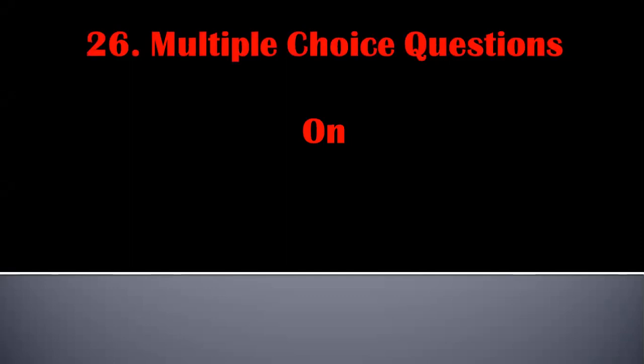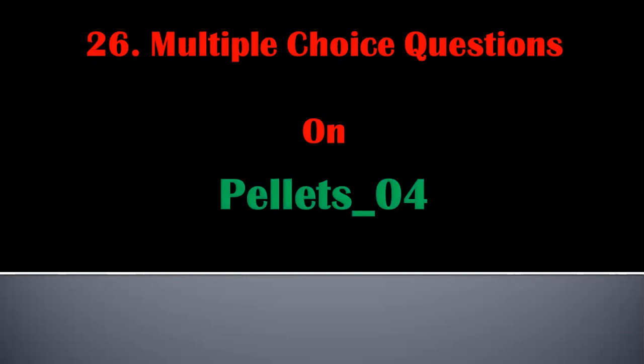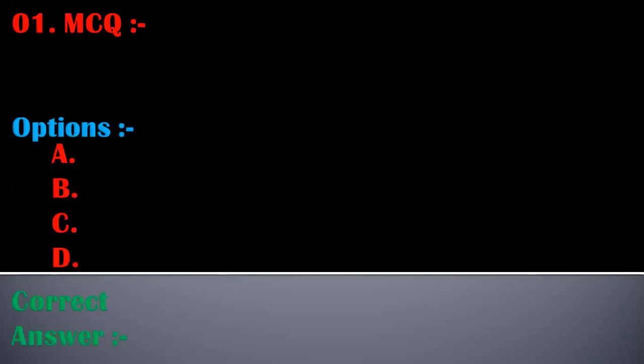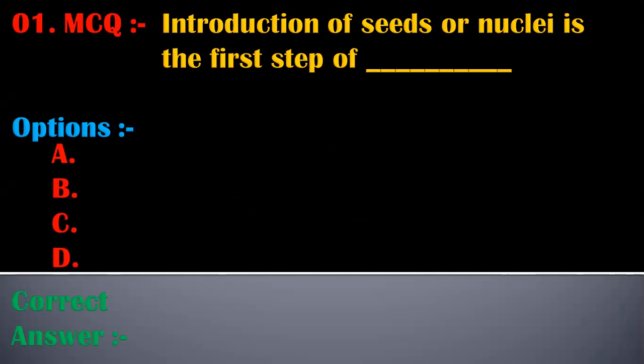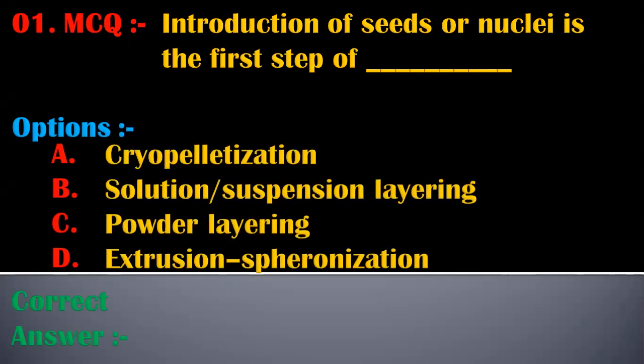Welcome viewers, welcome to the series of multiple choice questions on pelletization, part 4. The first MCQ is: introduction of seeds or nuclei is the first step of — options are: A) cryopelletization, B) solution suspension layering, C) powder layering, D) extrusion spheronization. The correct answer is powder layering. Introduction of seeds or nuclei is the first step of powder layering.